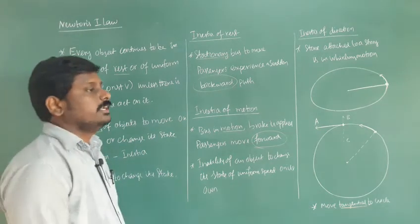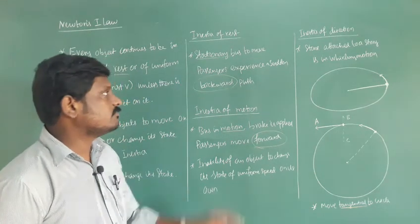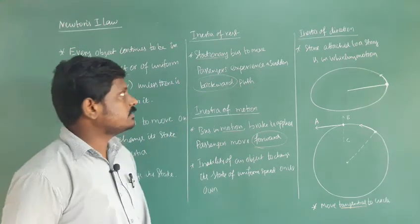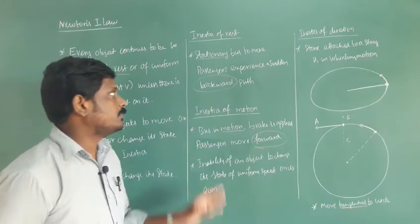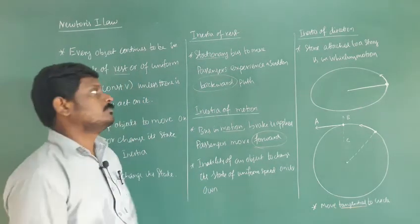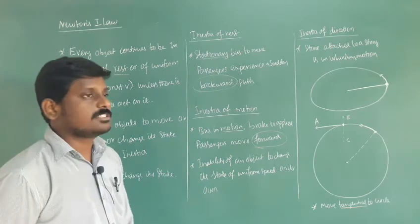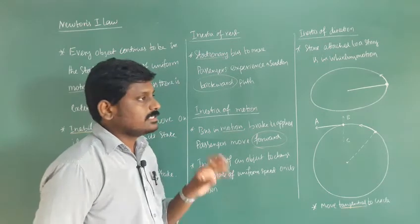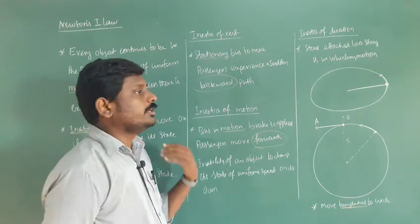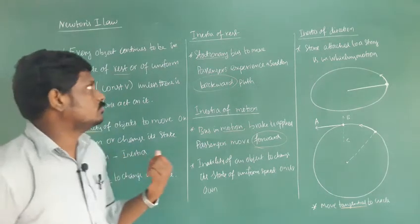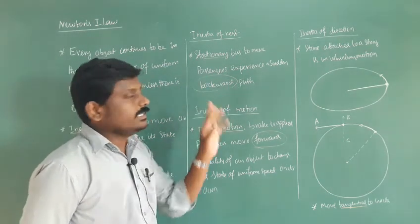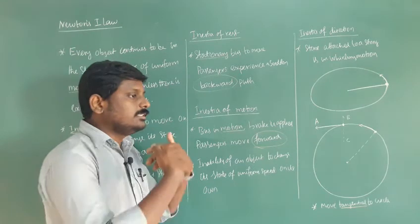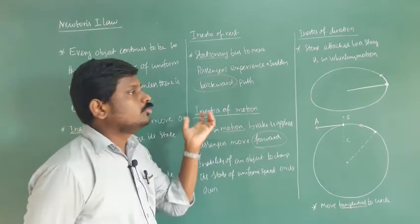There are three types of inertia: inertia of rest, inertia of motion, and inertia of direction. For the first type — inertia of rest — consider a stationary bus that suddenly starts to move. The passengers inside experience a sudden backward push because they are at rest and try to remain at rest. That is the inability of an object to move on its own — inertia of rest.